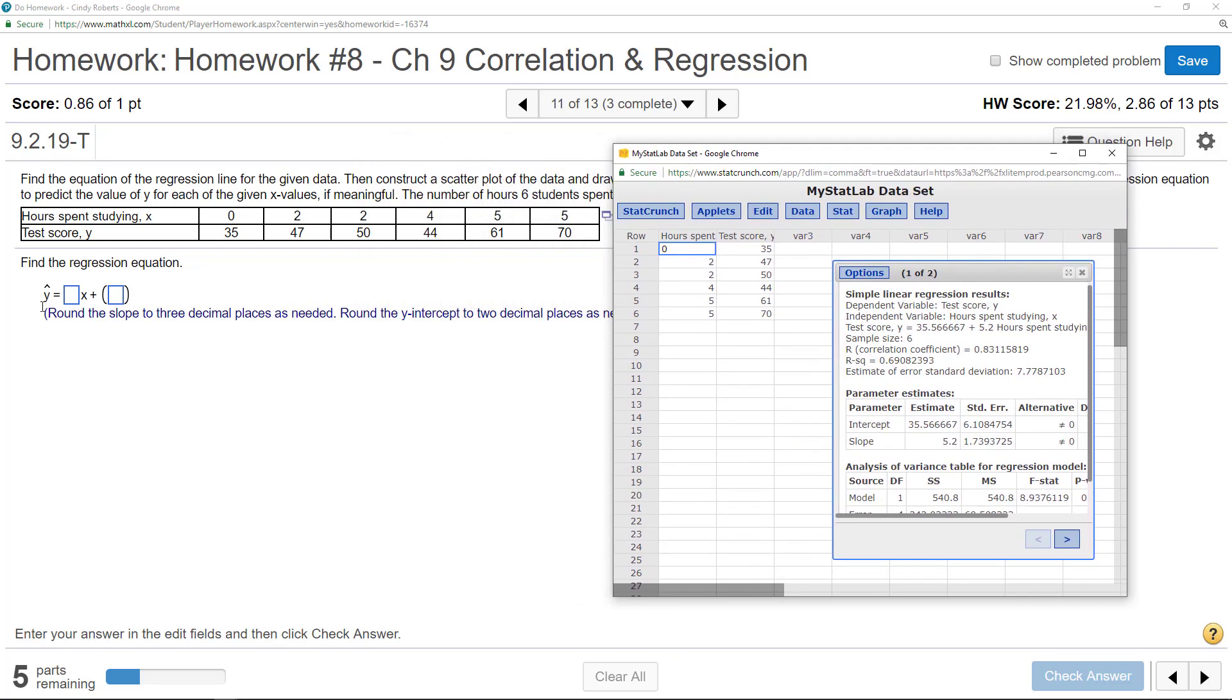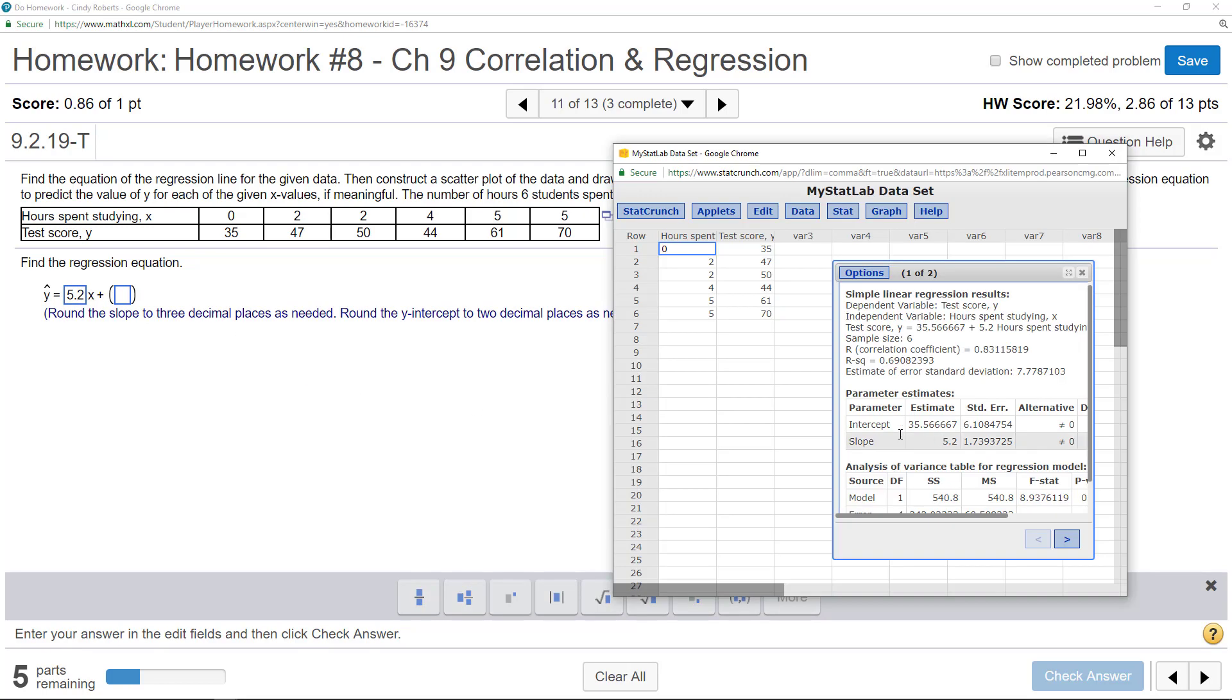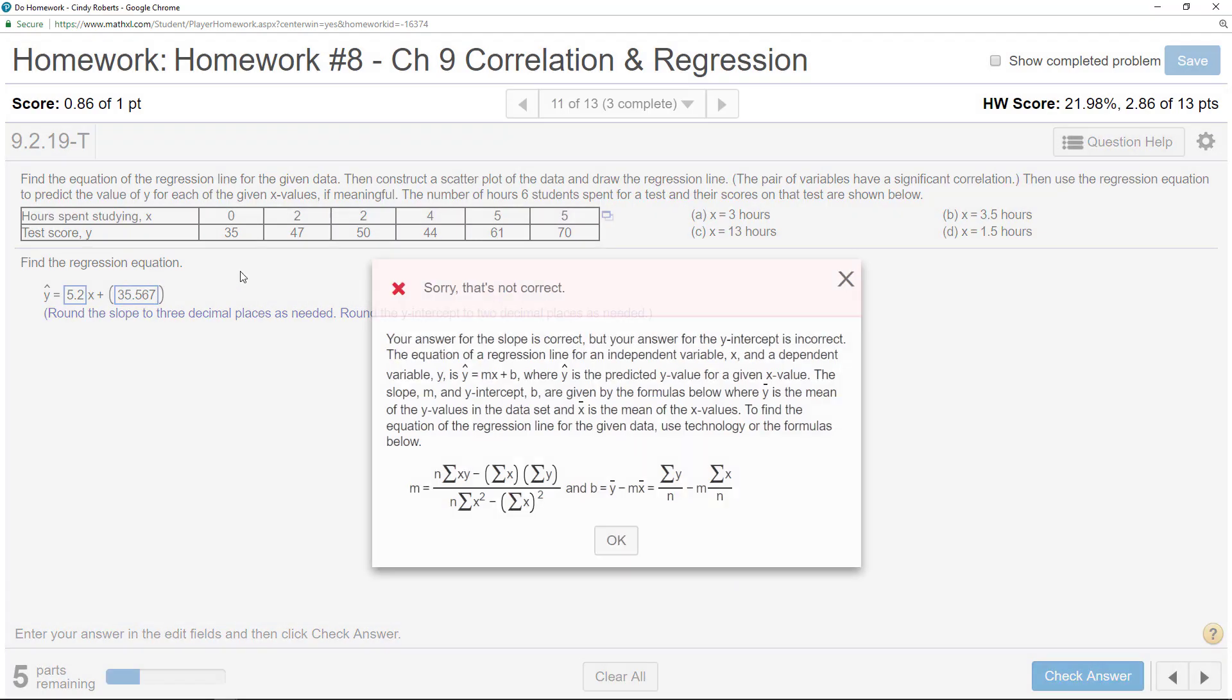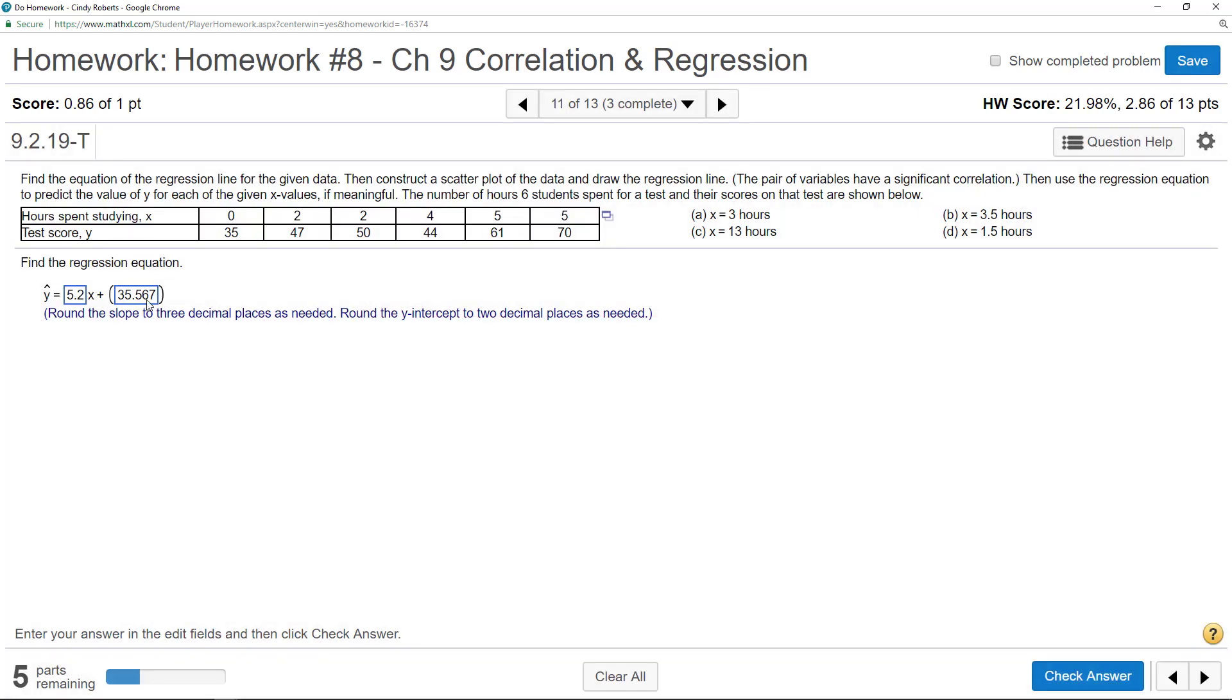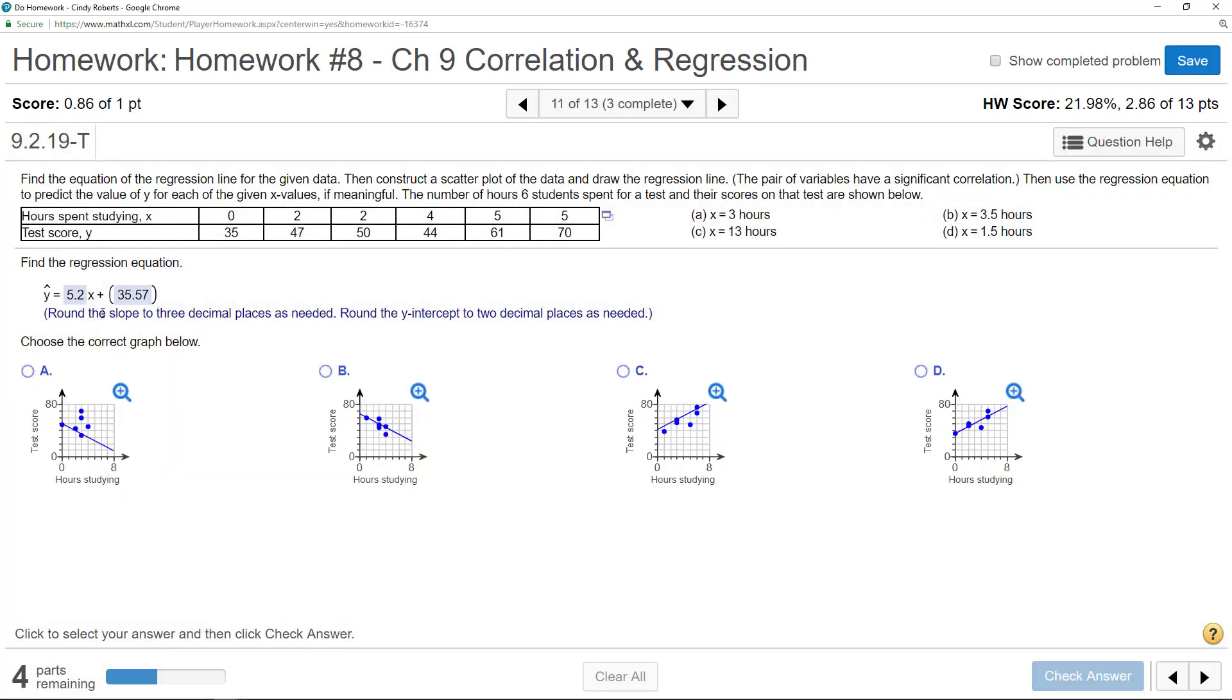When you see this right here, you should remember in algebra y equals mx plus b, where m is the slope. So the slope is 5.2 and then the intercept 35.567. The first time I did this, I got it wrong because I didn't read the instructions.